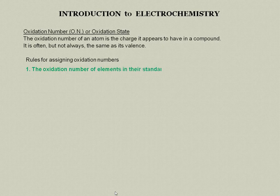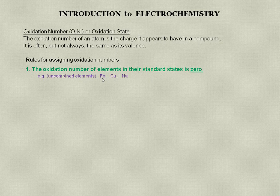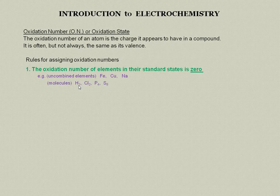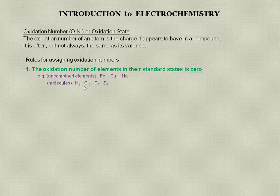There are three rules for assigning oxidation numbers that you need to be familiar with. The first one is that the oxidation number of elements in their standard states is zero. For example, in their uncombined elements like metals—iron, copper, and sodium—they have neither gained nor lost any electrons. They're perfectly neutral, so we assign them an oxidation number of zero. Similarly, with neutral molecules like H₂, Cl₂, P₄, and S₈, all the atoms within the molecules are neutral, and therefore, they're assigned a value of zero for their oxidation number.